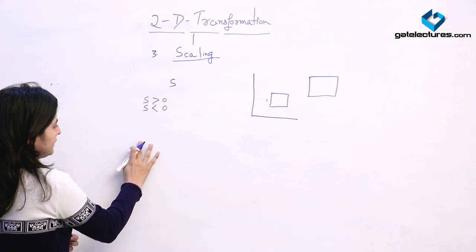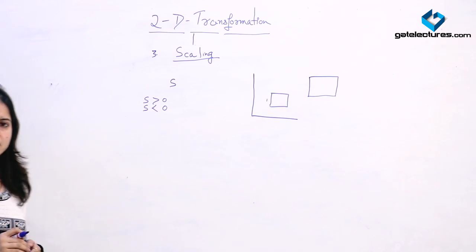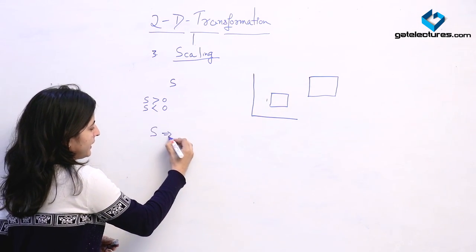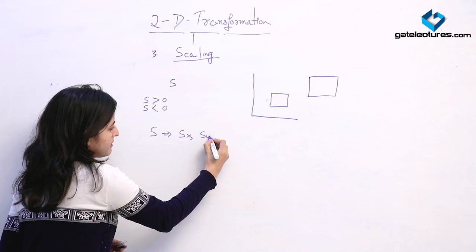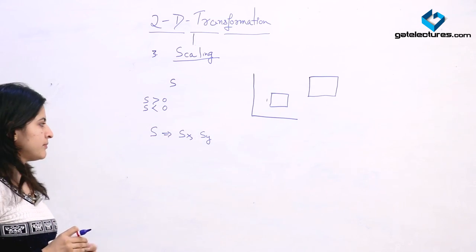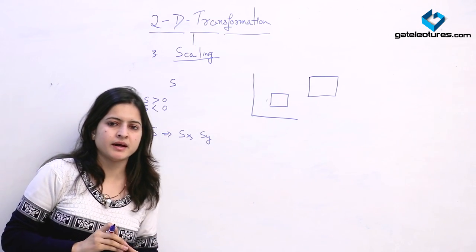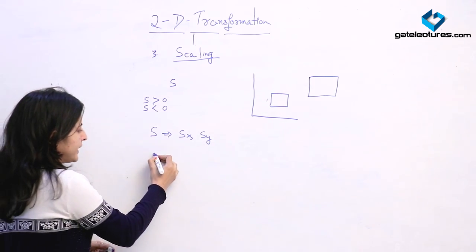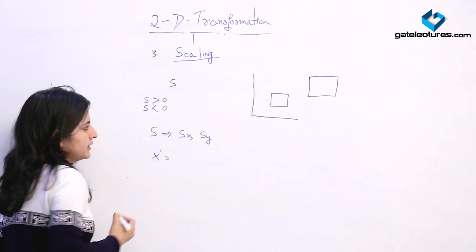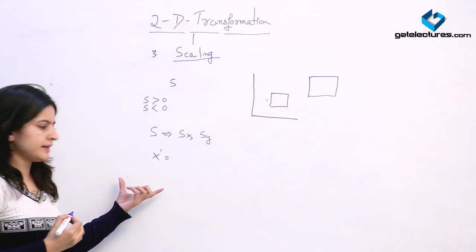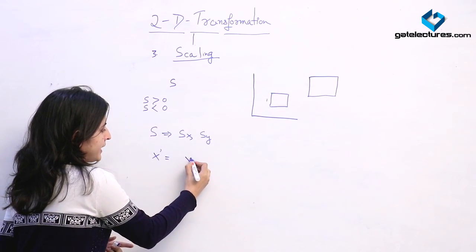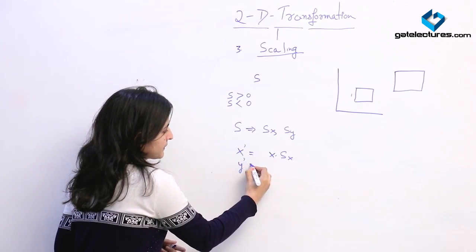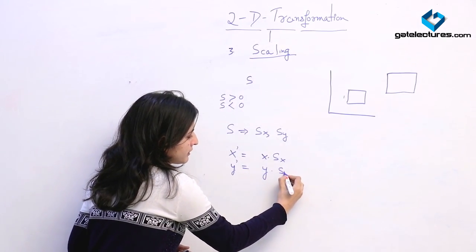Now we will see — here we are directly multiplying the coordinates with the scale factors. The scale factor will be represented by sx comma sy, meaning we are scaling the x coordinate by multiplying with sx, and we are scaling the y coordinate by multiplying with scale factor sy. So we can directly say that the new coordinates after scaling: x dash equals x dot sx, and y dash equals y dot sy.